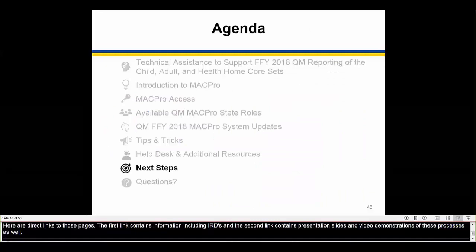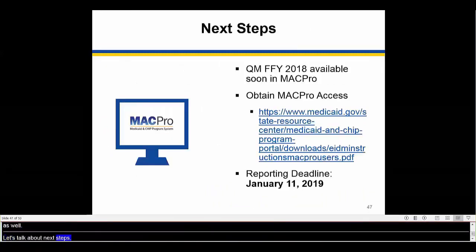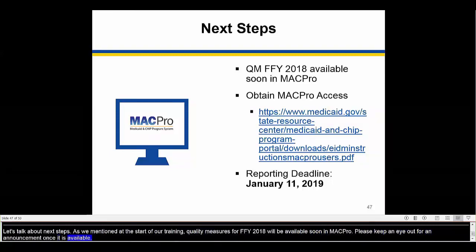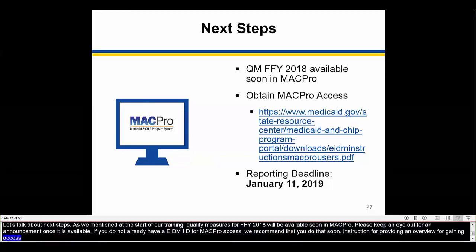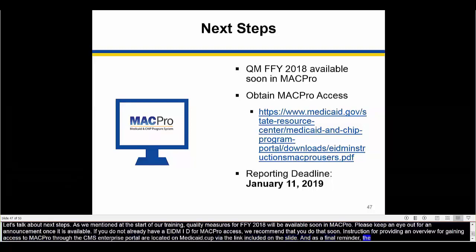Let's talk about next steps. Quality measures for Federal Fiscal Year 2018 will be available soon within MACPro — please keep an eye out for an announcement once it is available. If you do not already have an EIDM ID or MACPro access, we recommend that you do that soon. Instructions for gaining access to MACPro through the CMS Enterprise Portal are located on Medicaid.gov via the link included on this slide. As a final reminder, the reporting deadline is January 11, 2019.